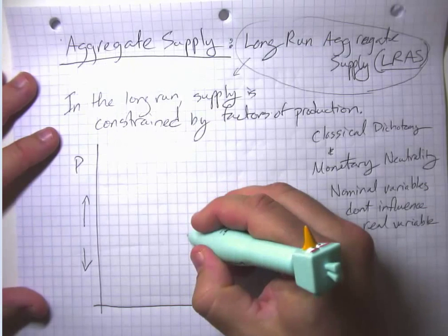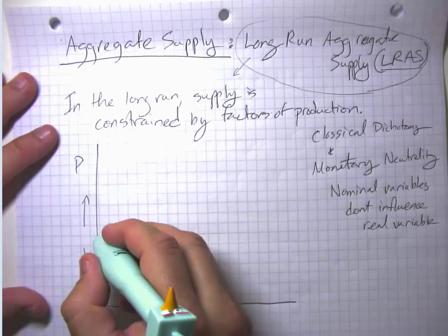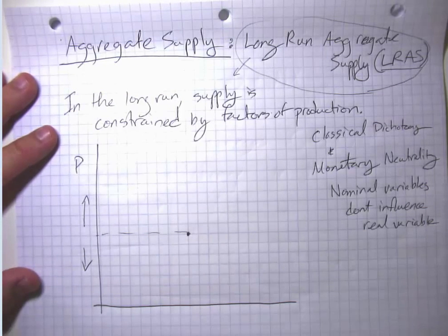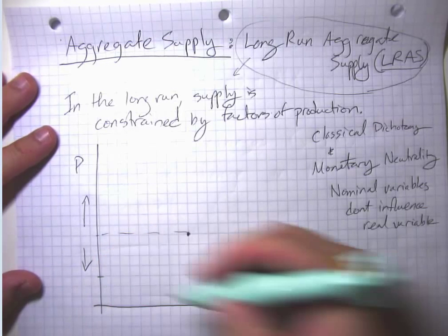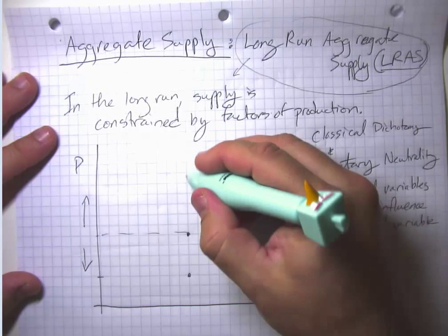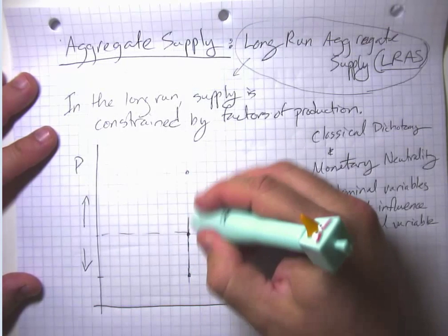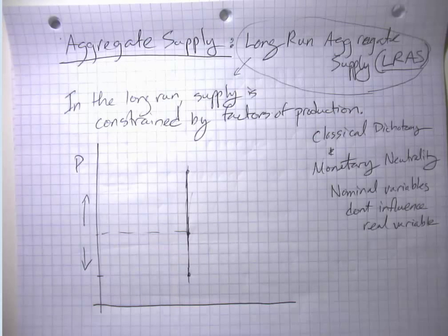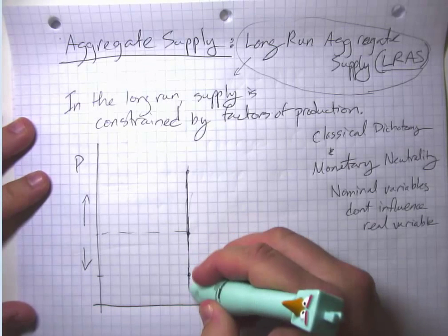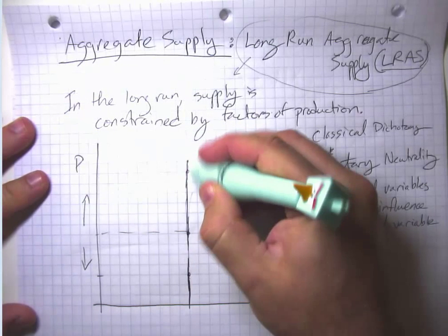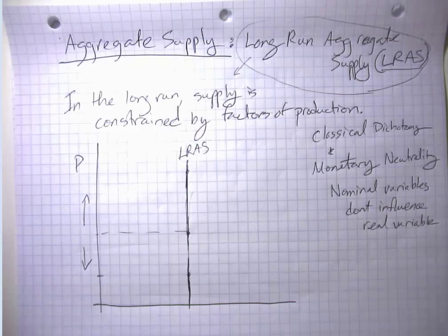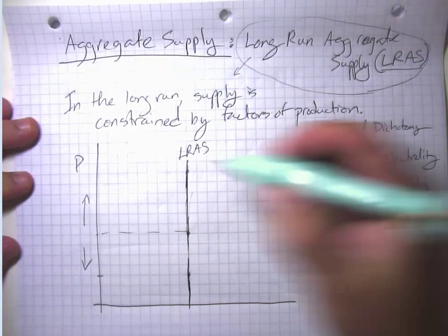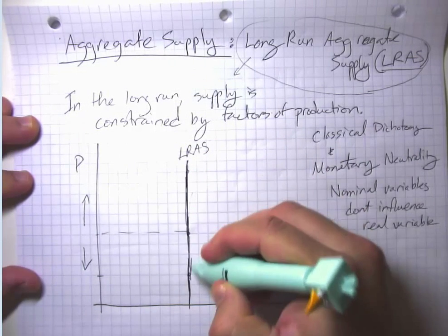So the idea here is that if this is the amount of real GDP supplied at a given price level, a lower price level is just changing the label. We don't think in the long run that will actually damage society's factors of production. If all prices went down in the economy, that doesn't suddenly cause people to lose their skills or cause the labor force to die off. So in the long run, we think the amount the economy can produce is not responsive to the price level — meaning the long run aggregate supply curve is totally vertical.